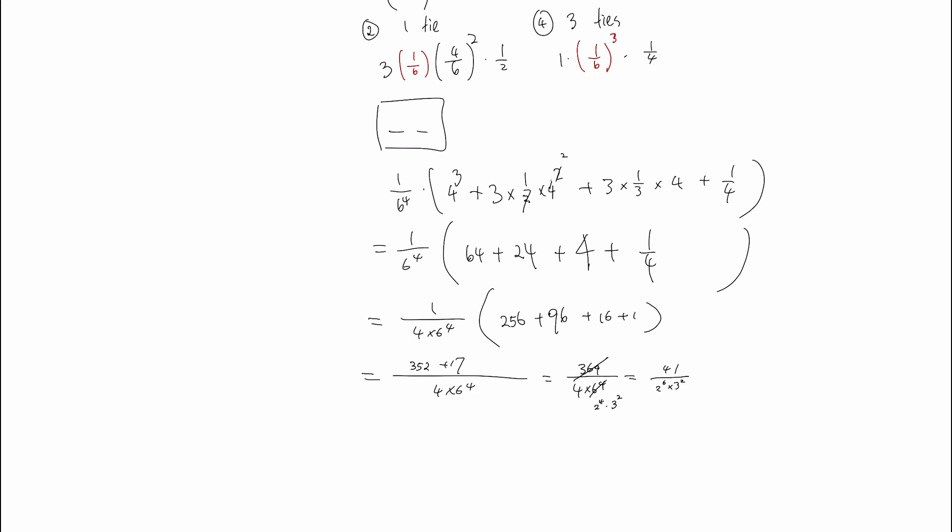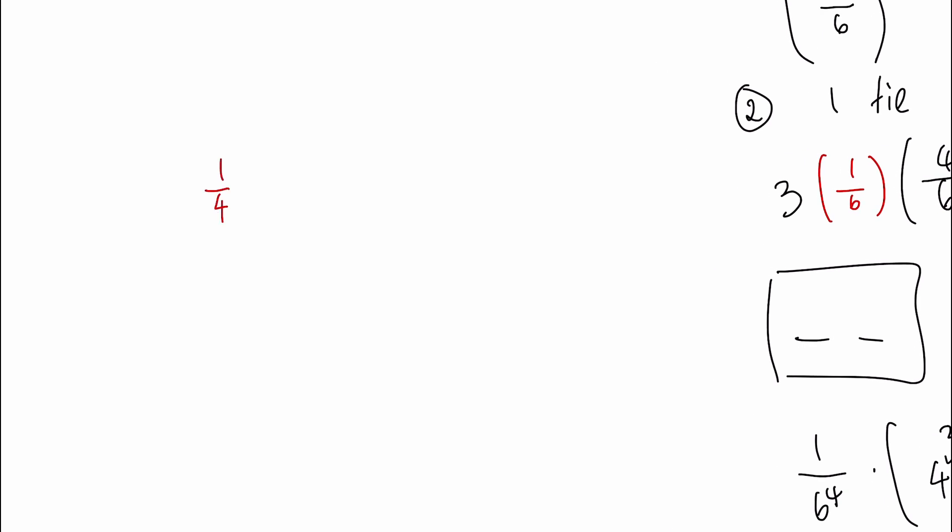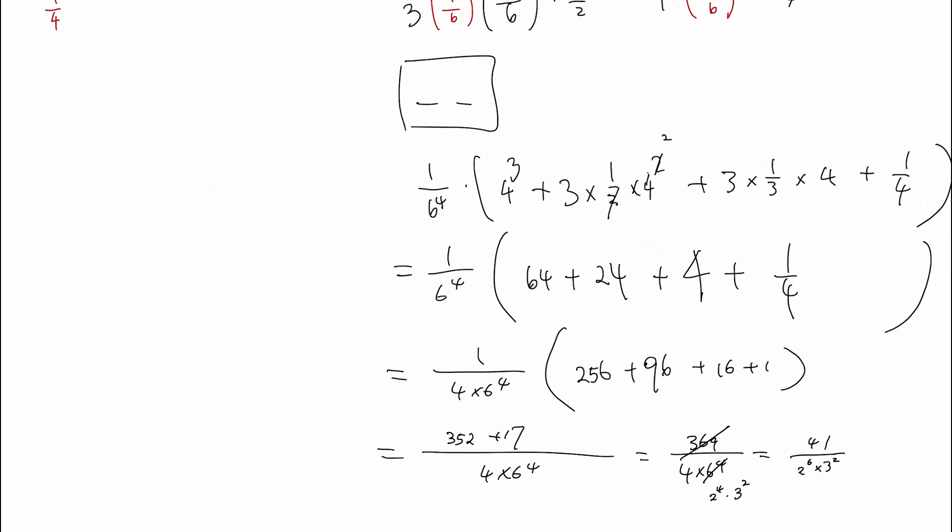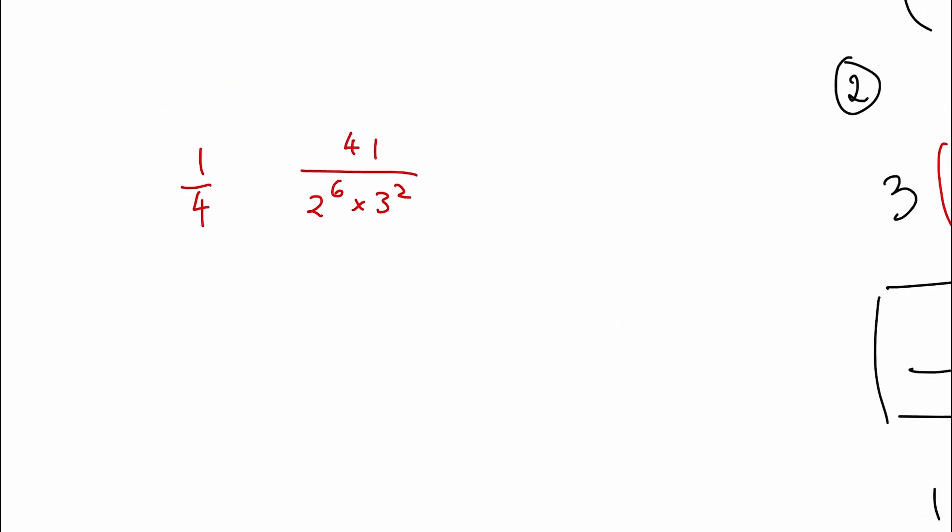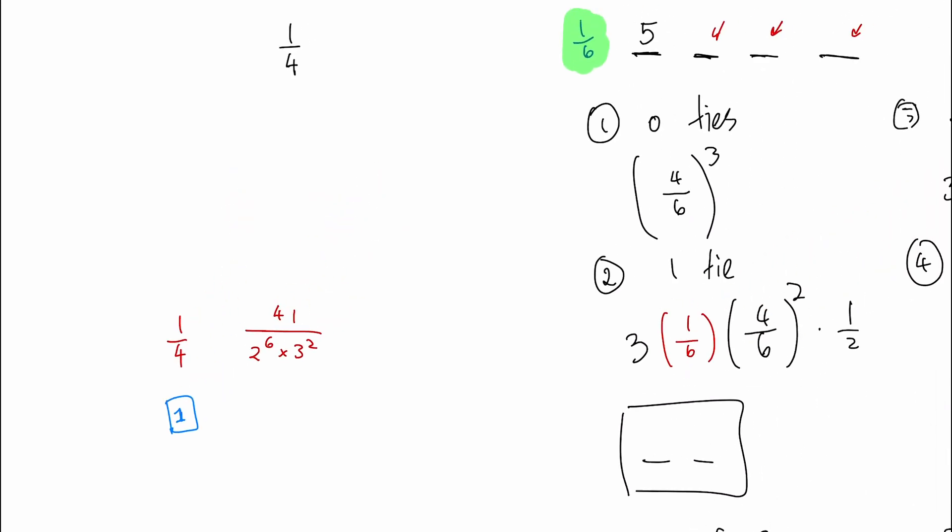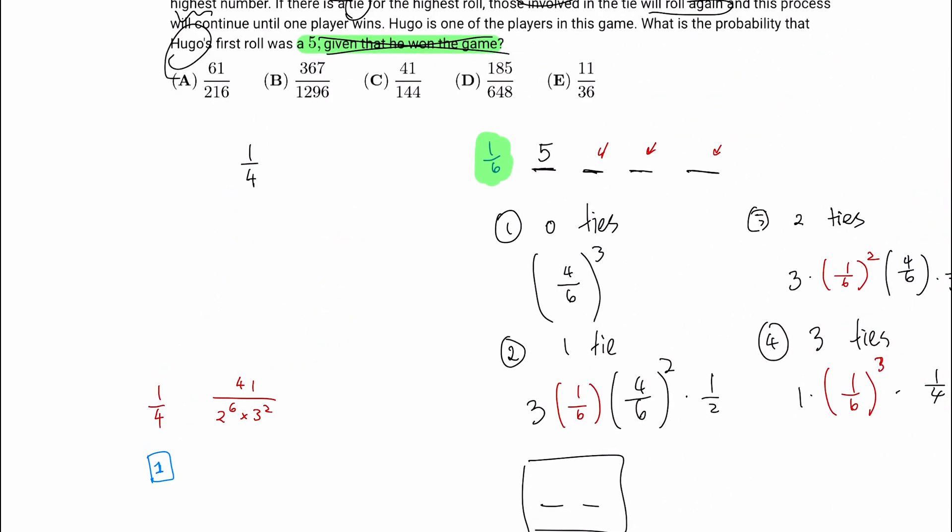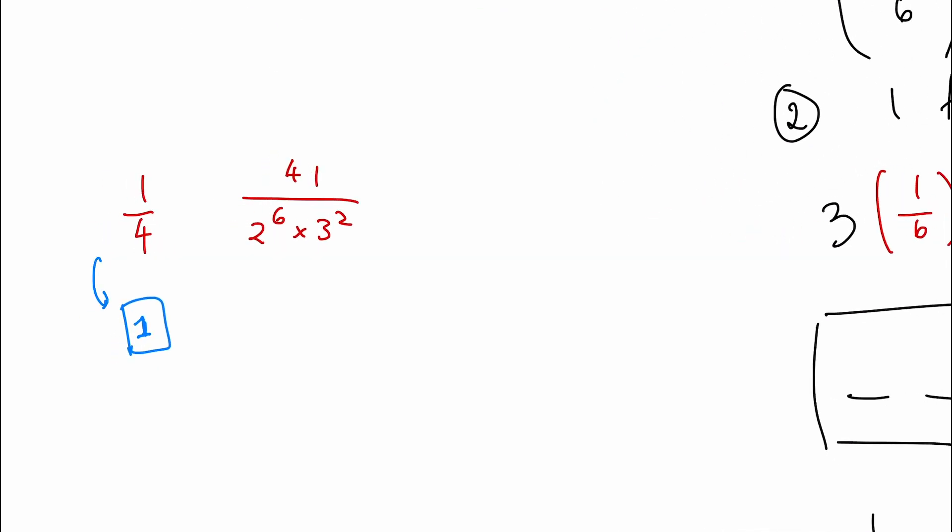Now, this is our probability of him winning and rolling a five. So the probability of him winning is one fourth. Probability of him winning and rolling a five is this: 41 over two to the sixth times three squared. I believe that's correct. Now, we're given that he already won, so the probability of that becomes one. Make sense? Because we are given that he has won in the last sentence.